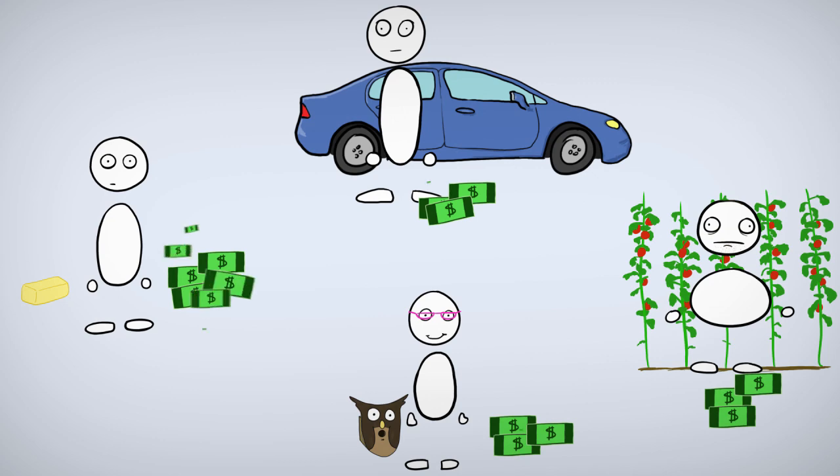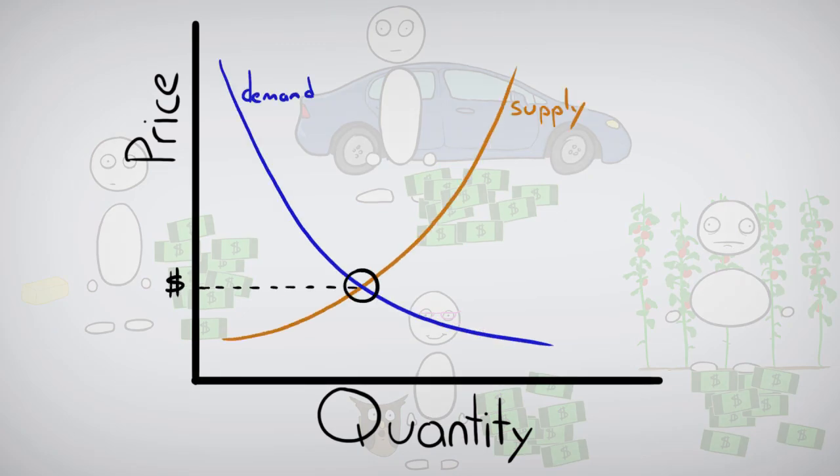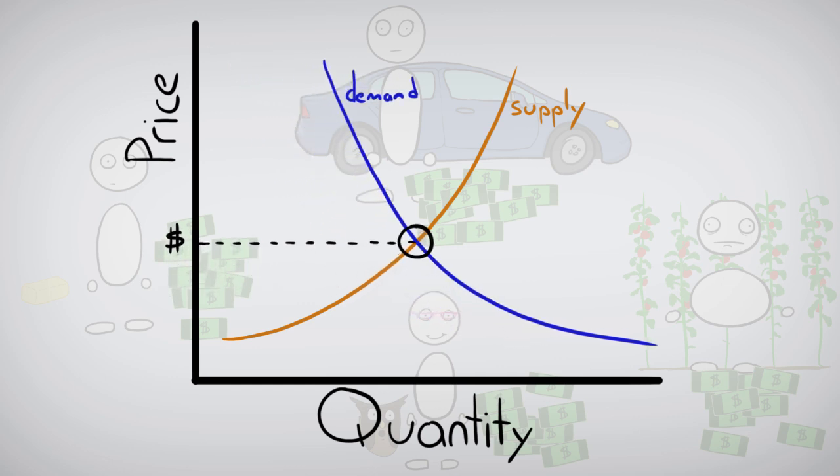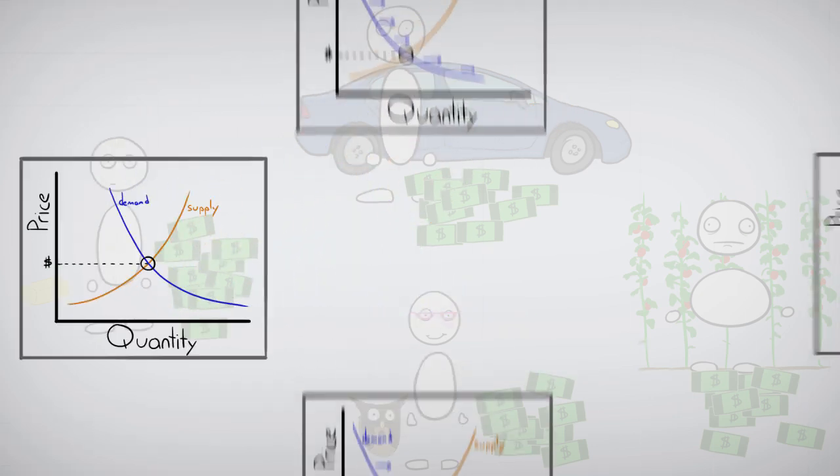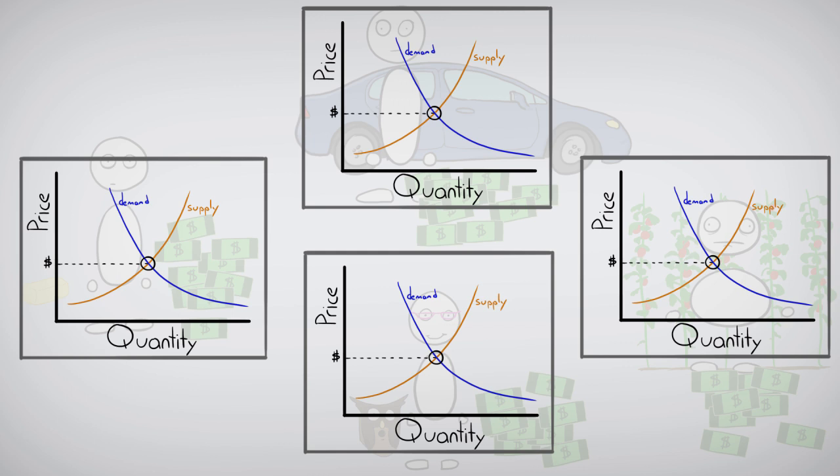So let's say everyone suddenly has more money, kind of like when money is printed by a country. If people have more money, they will buy more butter. As Jose runs out of butter, consumers will compete for his limited supply and the price will go up. This will happen for all commodities if everyone has more money. This is inflation. It's not an increase in the value of commodities, but an increase in the amount of money that increases demand and drives prices up.